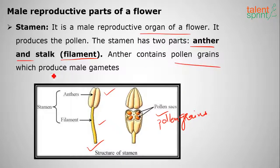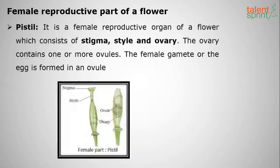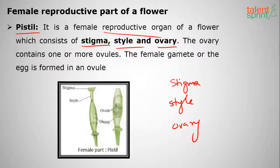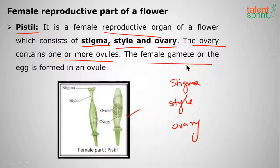Pollen grains are the male gametes of a plant. The anther contains pollen grains, which are useful in fertilization. Moving on to the female reproductive part — the pistil — it contains three parts: stigma, style, and ovary, in that order from top to bottom. The ovary contains one or more ovules, as you can see in the cross-section of the ovary.